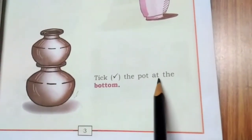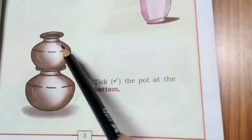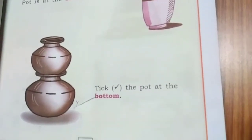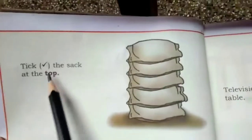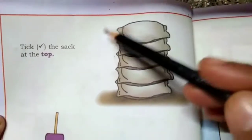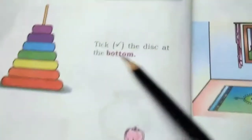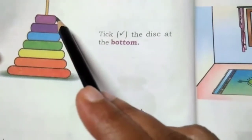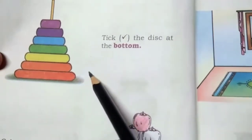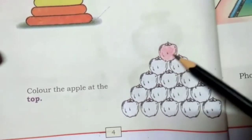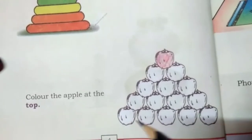Let's tick the bottom and the top. Tick the pot at the bottom. Tick the sack at the top — where is the sack? This is the top and this is the bottom. Tick the dice at the bottom. Now color — color the apple at the top. The apple is at the top, and the bottle bottom apples are here.